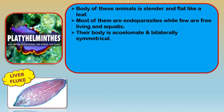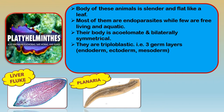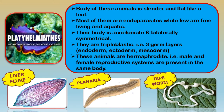Their body is acoelomate, meaning no body cavity, and bilaterally symmetrical. They are triploblastic, having three germ layers — endoderm, ectoderm, and mesoderm. These animals are hermaphrodite, meaning the male and female reproductive systems are present in the same body.